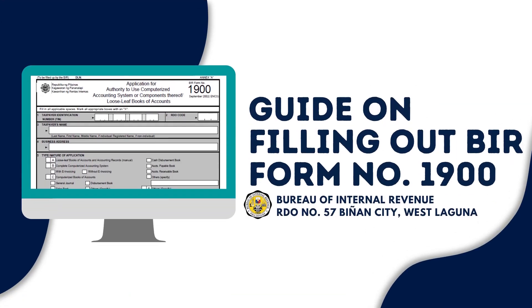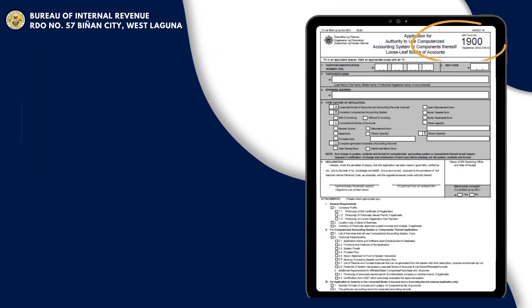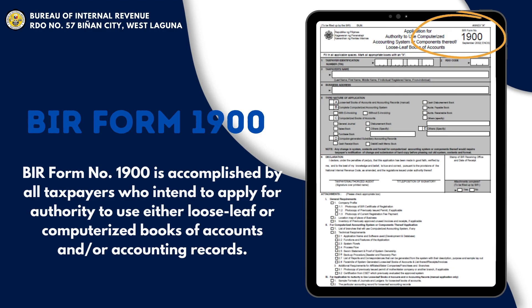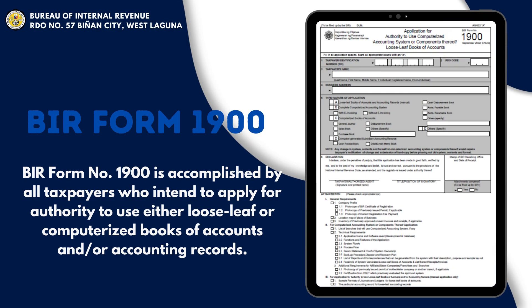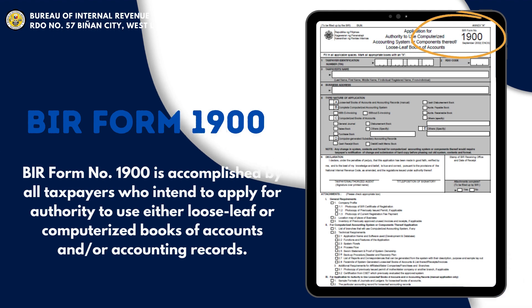Guide on filling out BIR Form No. 1900. BIR Form No. 1900 is accomplished by all taxpayers who intend to apply for authority to use either loose-leaf or computerized books of accounts and/or accounting records.